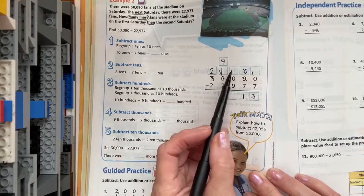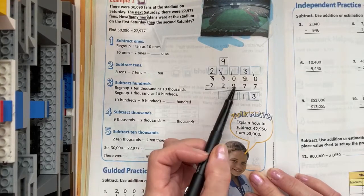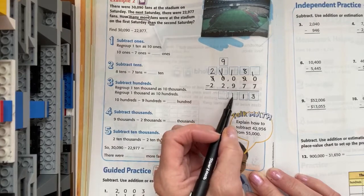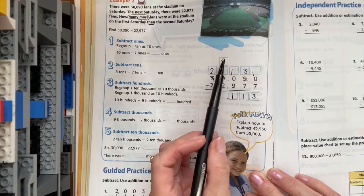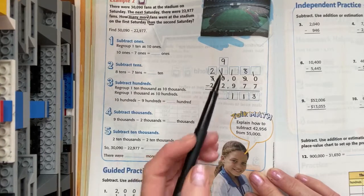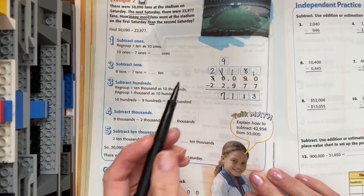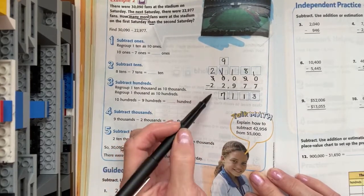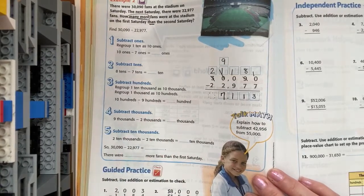So, now I have ten hundreds minus nine hundreds. So, ten minus nine is one. Now, I can finish thousands. Nine groups of a thousand minus two groups of a thousand is seven thousand. And two minus two is zero. We don't need to put anything there. There we go.